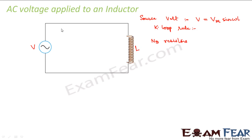Suppose this inductor has inductance L. As soon as an alternating current flows, the current keeps changing. When current changes, the magnetic flux also changes. By Faraday's and Lenz's law, a self-induced EMF is generated in the inductor that opposes the change. So there are two EMFs: the source voltage and the self-induced EMF, which we call E.